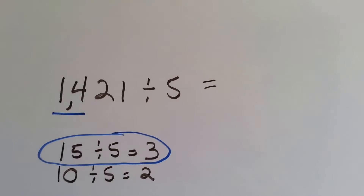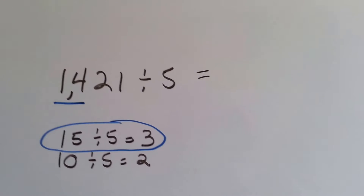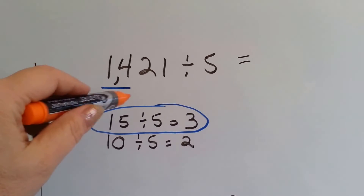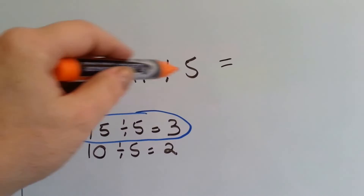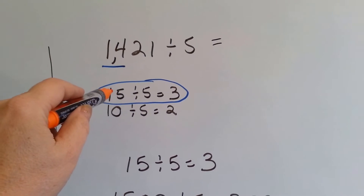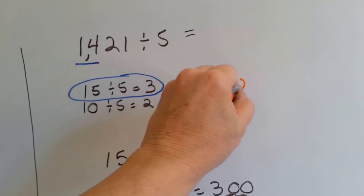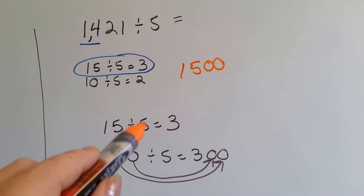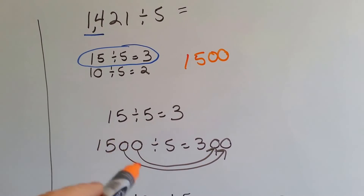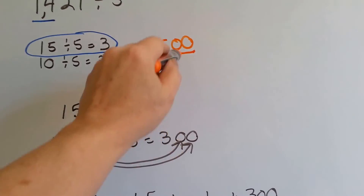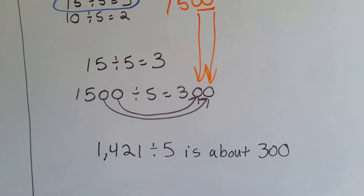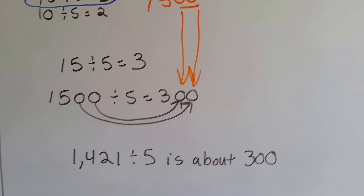Let's try one more. We've got 1421 divided by 5. Remember, we're estimating. This 14 is close to 15, and 15 is the closest multiple of 5. 15 divided by 5 equals 3, so we can round 1400 off to 1500. 15 divided by 5 is 3, so 1500 divided by 5 would be 300 because we add the two zeros on the end. So 1421 divided by 5 is around 300.